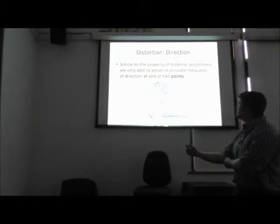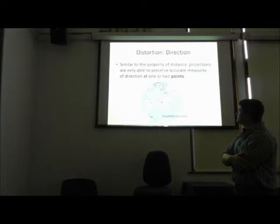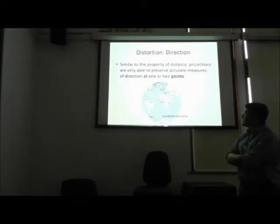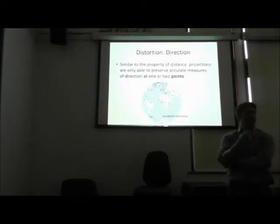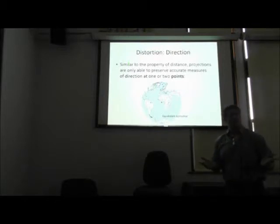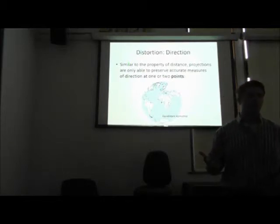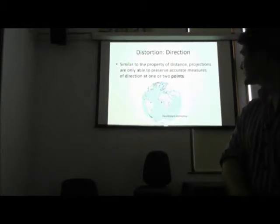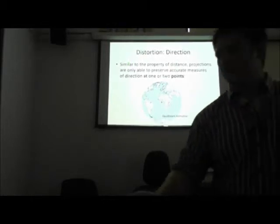For that final dimension in which surface features can be distorted — direction — it's similar to the property of distance in that it's not possible to accurately preserve direction for more than just limited portions of the map, in this case actually a single point. The same projection, equidistant azimuthal, also preserves direction. So if you were to chart a course, you would use a projection like this and get an accurate least-cost pathway.